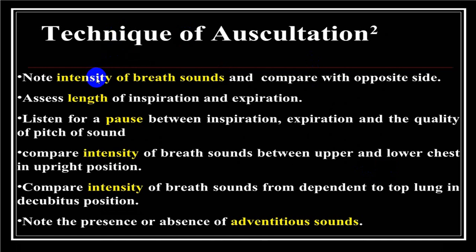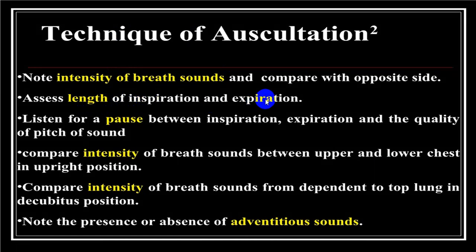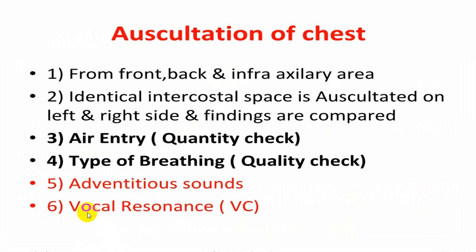First assess the intensity of breath sounds: present, absent, loud, or reduced. Then look for any adventitious sound during inspiration or expiration. Also note if there is any pause between inspiration and expiration. We also look at intensity in upright versus supine posture. After all this, we perform vocal resonance — examining the front, back, and lateral axillary areas. In summary: breath sounds first, then quality or type, then adventitious sounds, then vocal resonance.